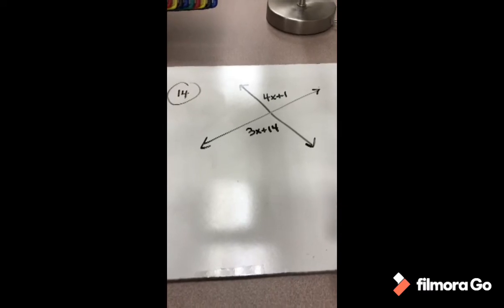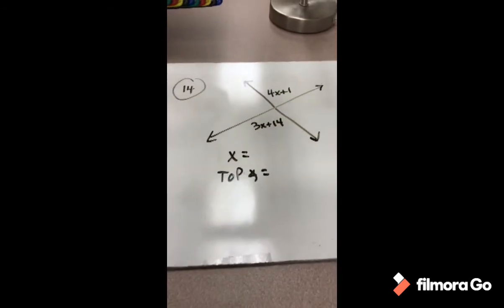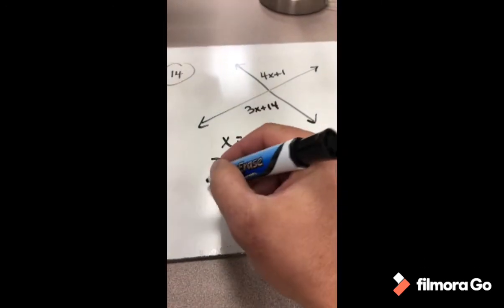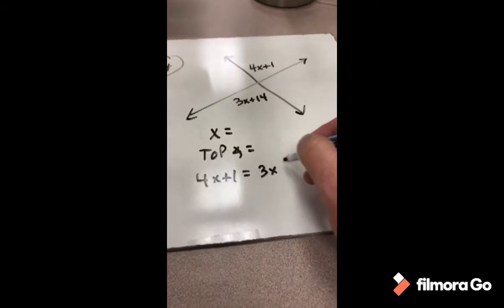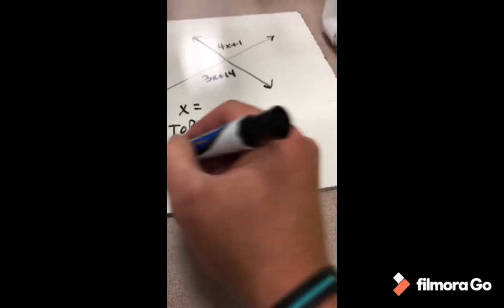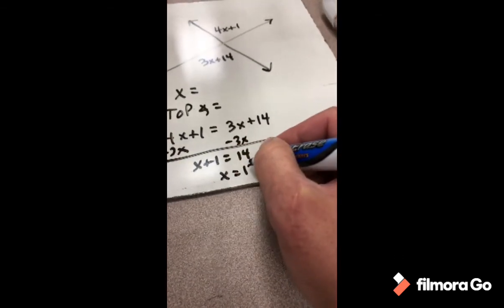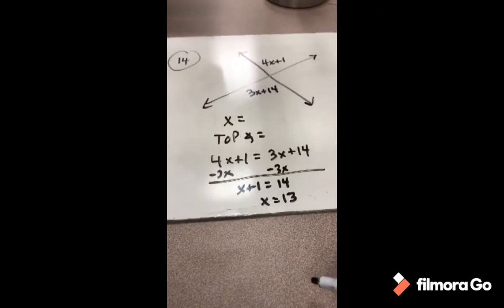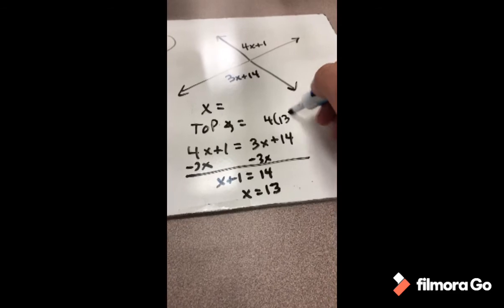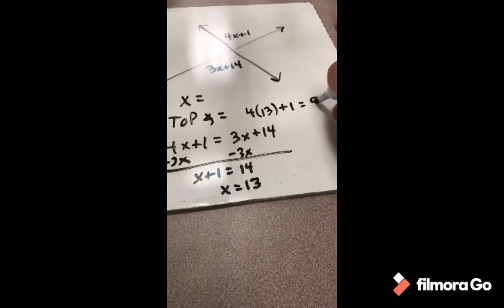For number 14, find the value of x and the top angle. We have a pair of vertical angles, which are equal, so: 4x + 1 = 3x + 14. Subtracting 3x from each side: x + 1 = 14. Subtracting 1: x = 13. Plugging 13 back in for the top angle: 4(13) + 1 = 52 + 1 = 53 degrees.